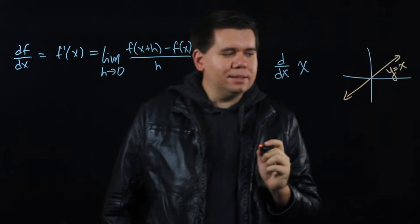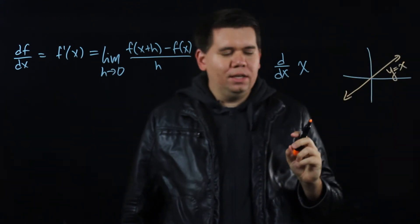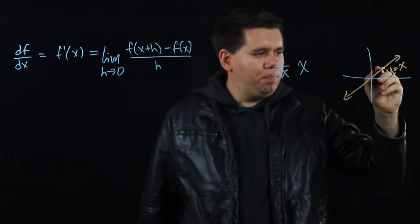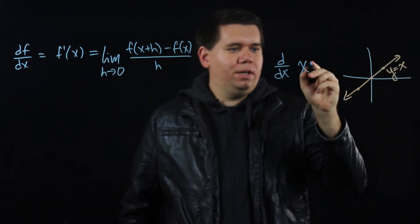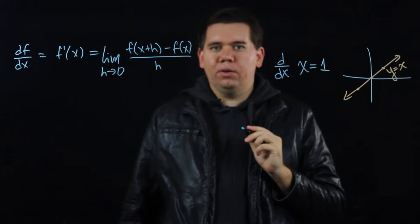And we can ask, what is the slope at any given point? Notice no matter what point you pick, it has the same slope, a slope of 1. So that derivative would just be 1.